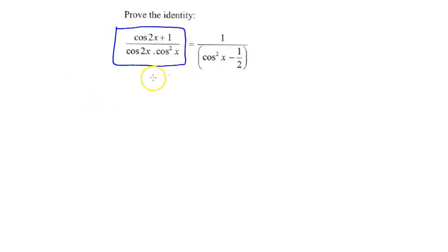So we'll start off our proof by saying the left hand side is equal to cos 2x plus 1, all over cos 2x times cos squared x. Now if we look at this, we have cos 2x which has three expansions.